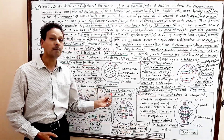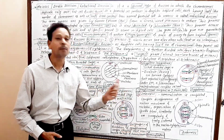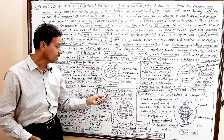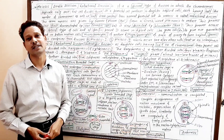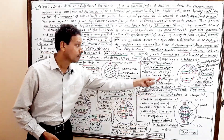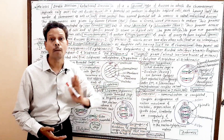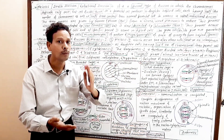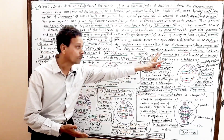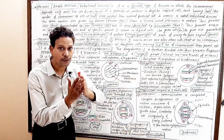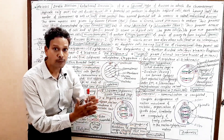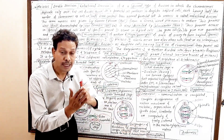The next stage is diplotene — the double threaded stage. Just opposite to zygotene, where homologous chromosomes paired (synapsis), at diplotene a force of repulsion starts and the homologous pair undergoes desynapsis — they begin to separate.